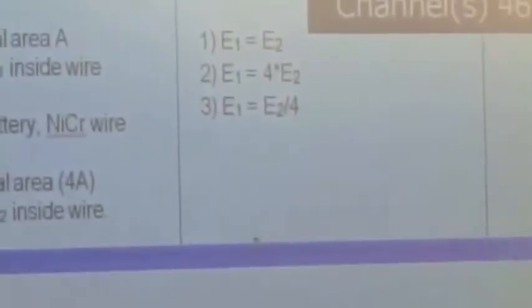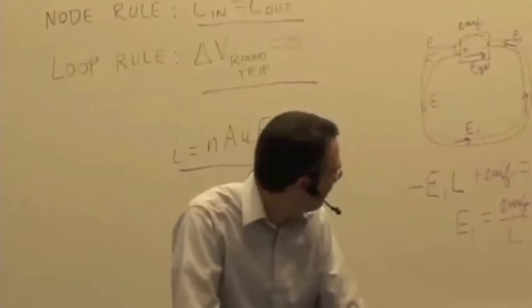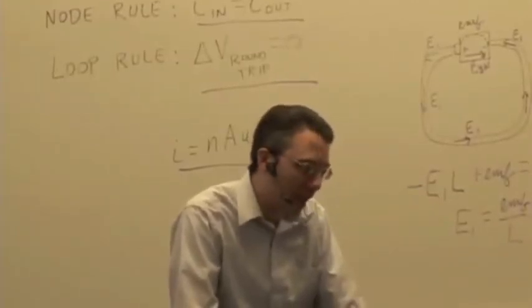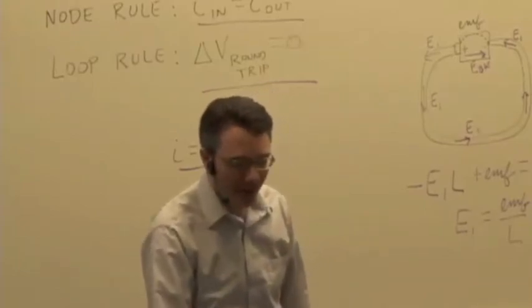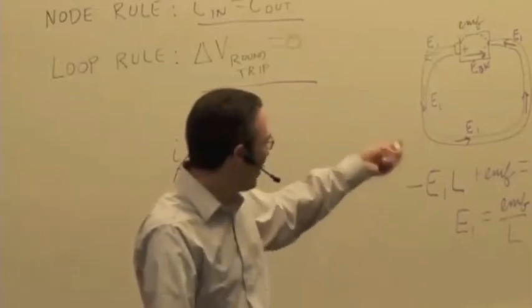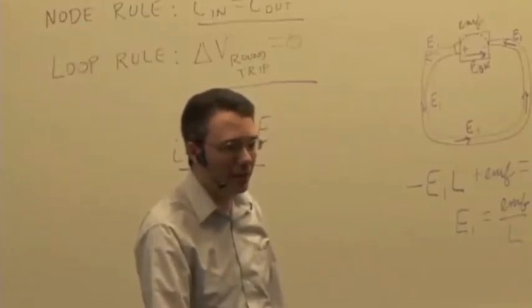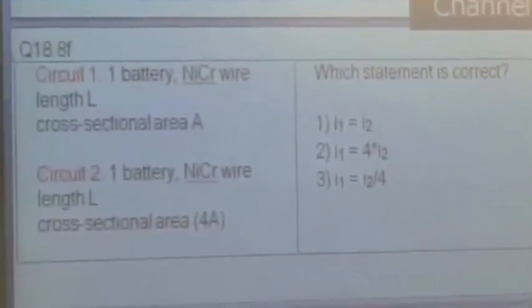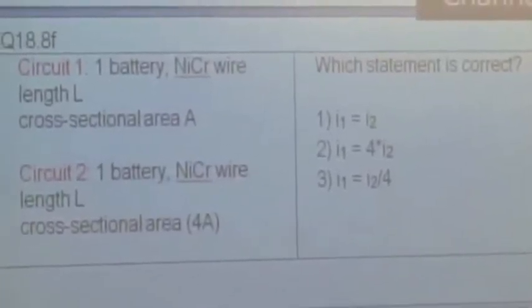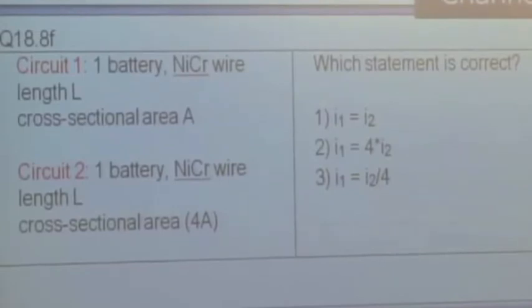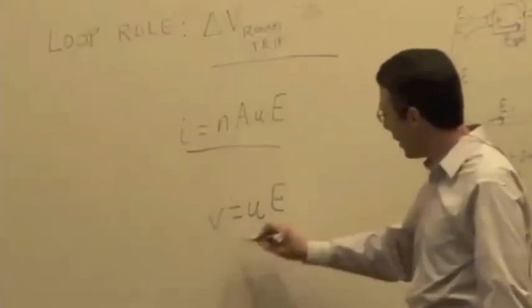This is one of those things where if you don't take the physical principle seriously, you'll go astray. We have the thicker wire, same electric field in both — but something's got to be different. So how do the currents compare in circuit one versus circuit two? Some are mentioning drift speed here: V equals UE, so you can think about that as well.